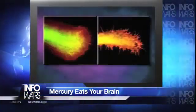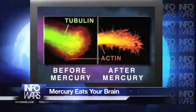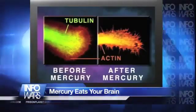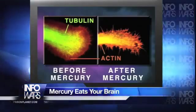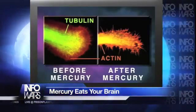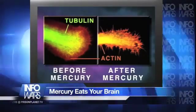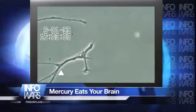Shown here is a neurite growth cone stained specifically for tubulin and actin before and after mercury exposure. Note that the mercury has caused disintegration of tubulin microtubule structure. These new findings reveal important visual evidence as to how mercury causes neurodegeneration. More importantly, the study provides the first direct evidence that low-level mercury exposure is indeed a precipitating factor that can initiate this neurodegenerative process within the brain.